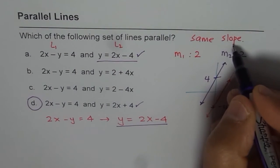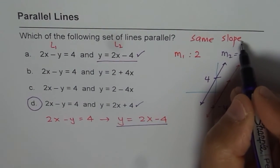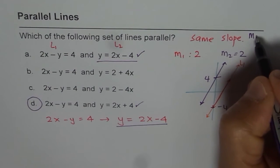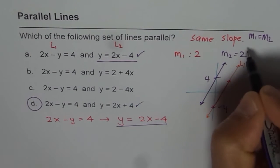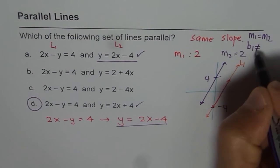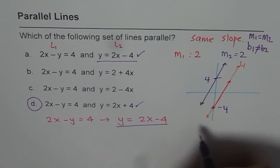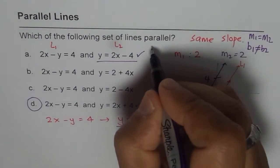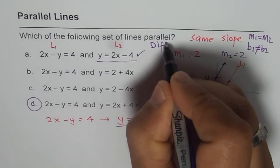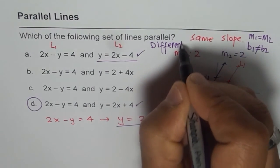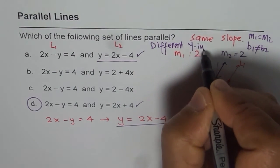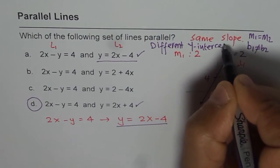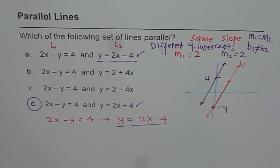So the important thing which we learn here is slope should be same. That means m1 equals to m2 but the other part is the y intercept should not be same. So they should have same slope and different y intercept.